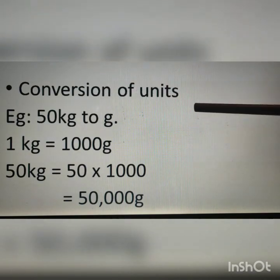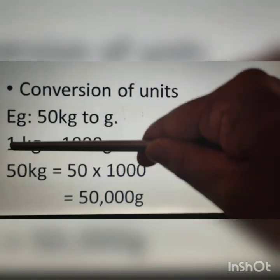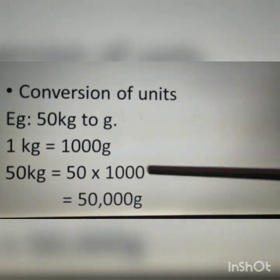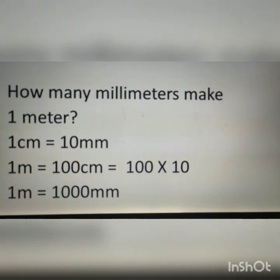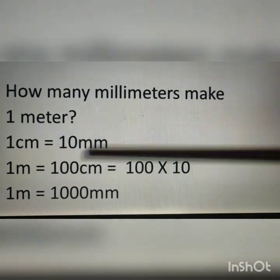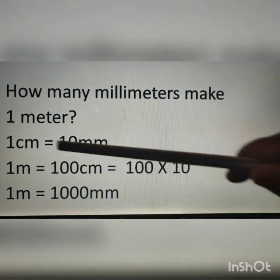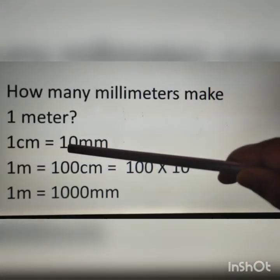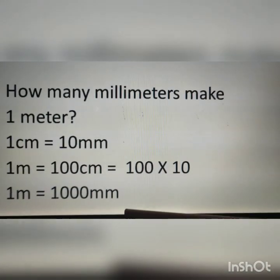Next is conversion of units. Example: convert 50 kilograms to grams. We know 1 kilogram is equal to 1000 grams. Therefore, 50 kilograms is equal to 50 multiplied by 1000, which equals 50,000 grams. Next: how many millimeters make 1 meter? We know 1 centimeter equals 10 millimeters and 1 meter equals 100 centimeters. Therefore, 1 meter equals 100 multiplied by 10, which gives 1000. So 1 meter is equal to 1000 millimeters.